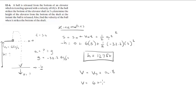All you've got to do is plug in the numbers. V equals 6 plus negative 32.2 times 3.